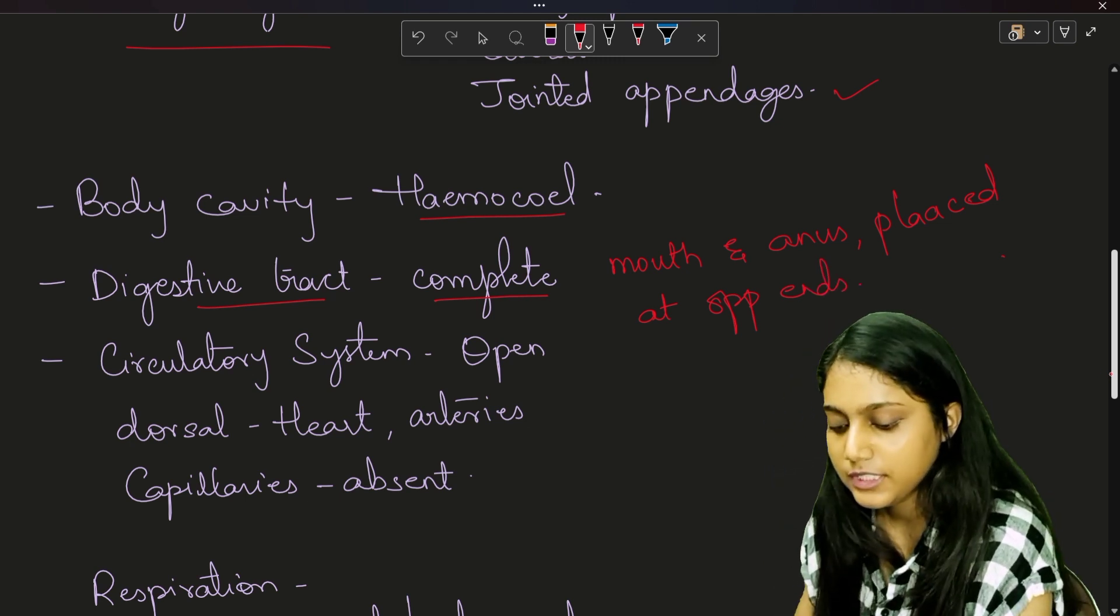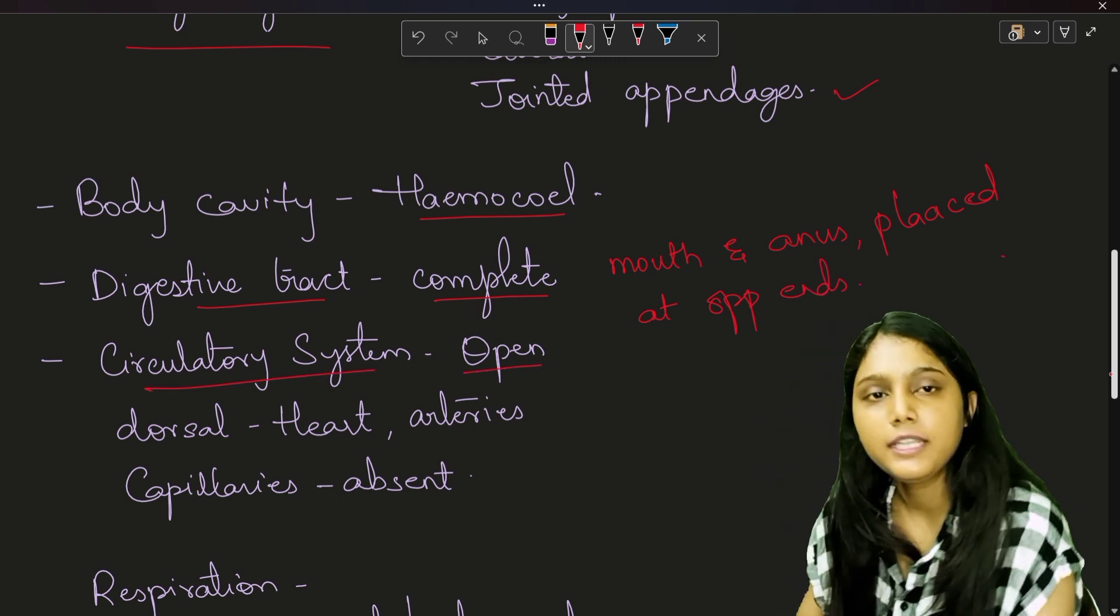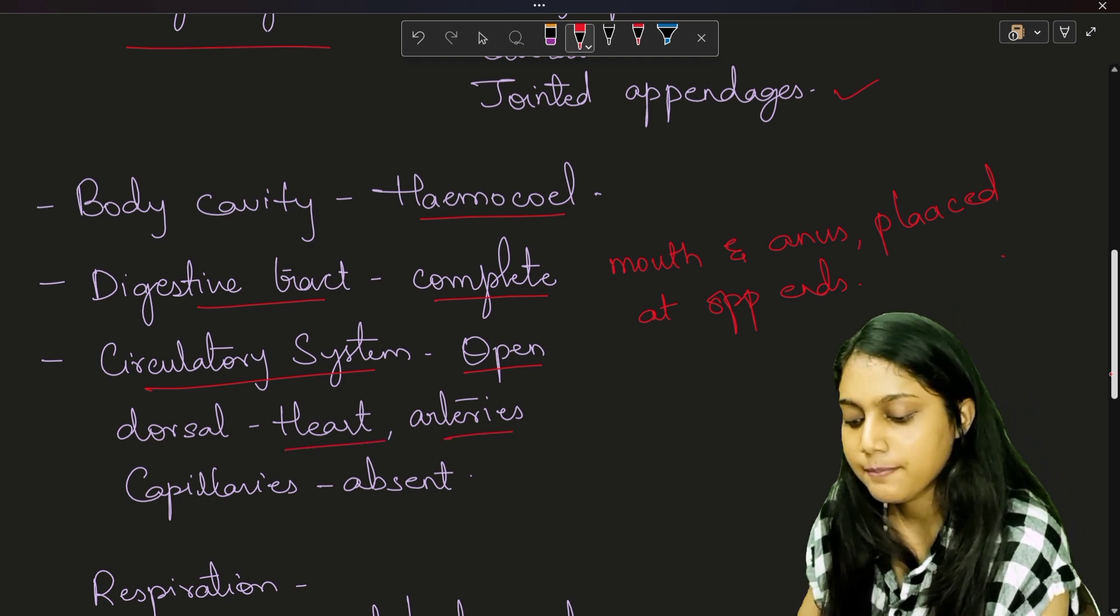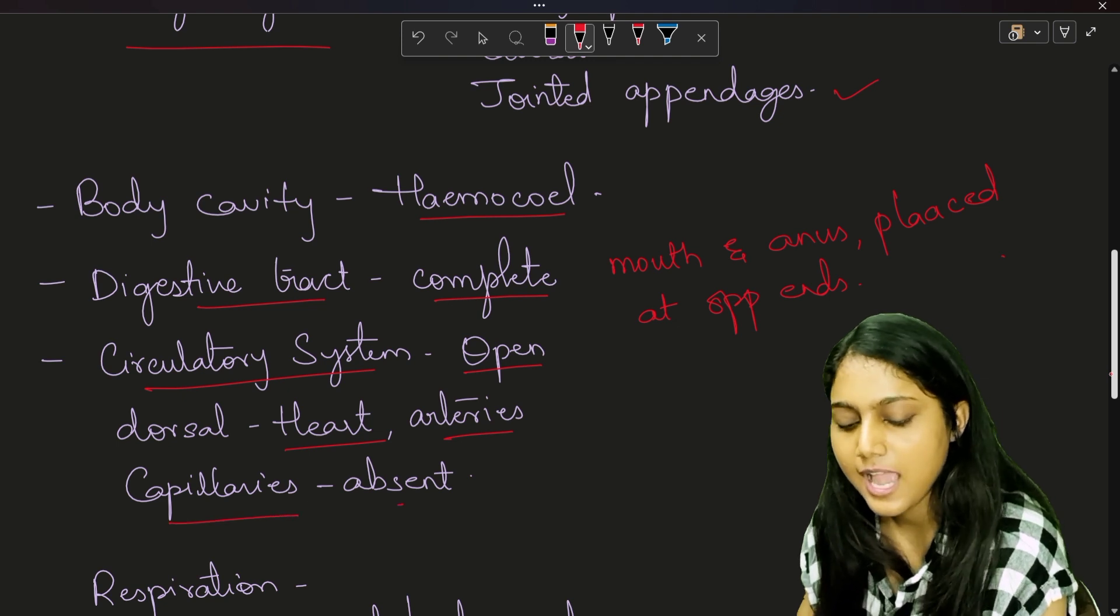Now talking about the circulatory system, they have open type of circulatory system present. Dorsal heart and arteries are present, but capillaries are absent.